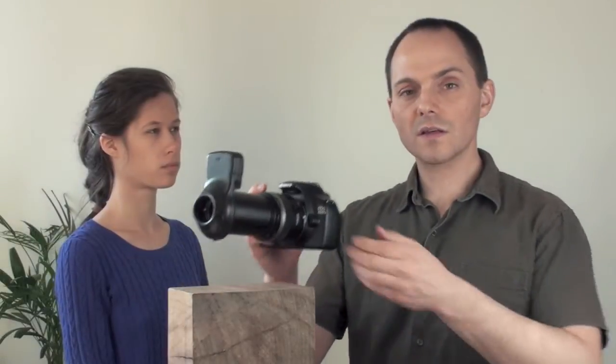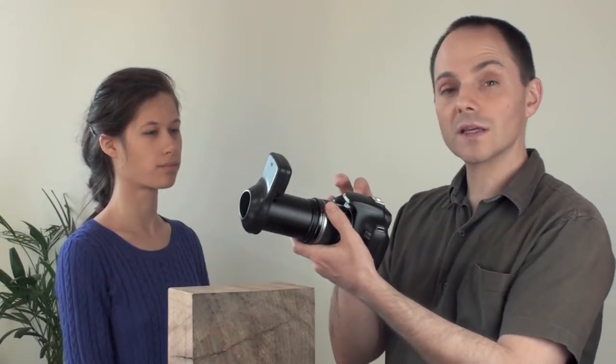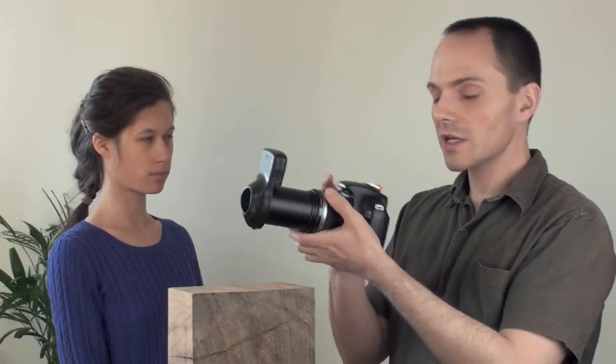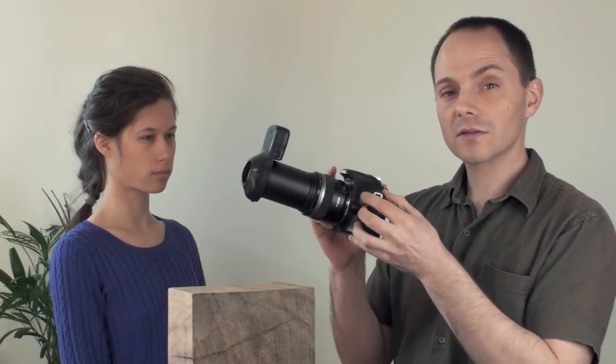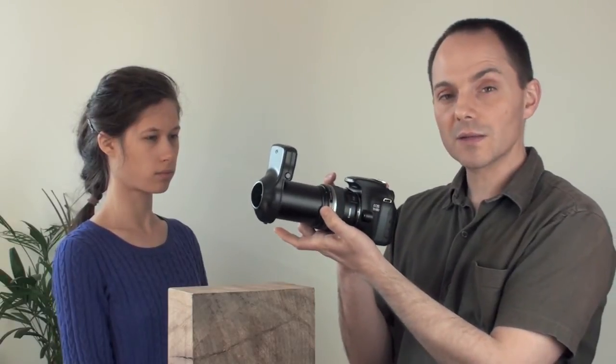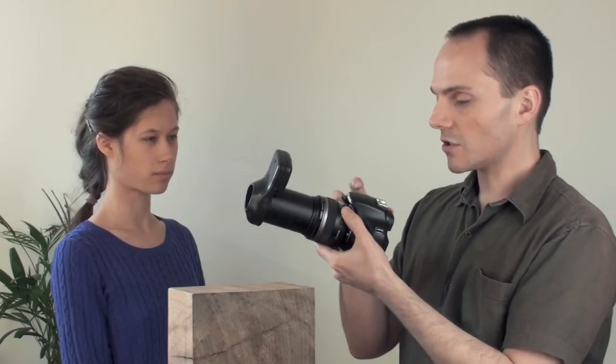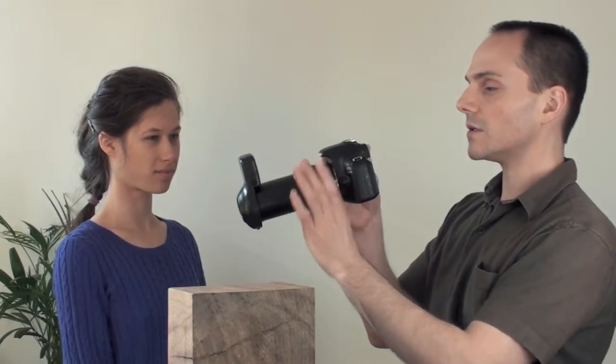So here's the Iris Explorer attached to the Canon camera. In this situation, we've got a Canon DSLR with the macro lens—the 60mm macro lens from Canon—and the Iris Explorer on the front. Let's switch it on and I'll show you how we take a picture.